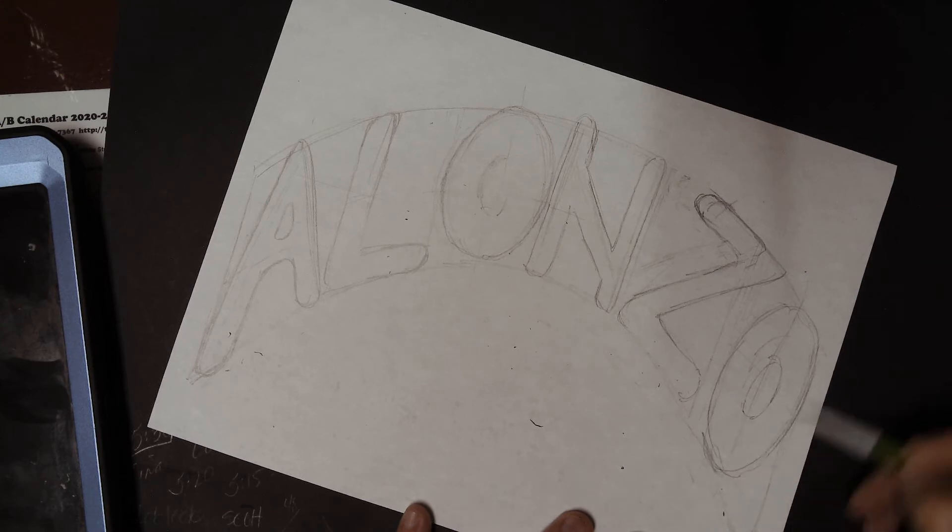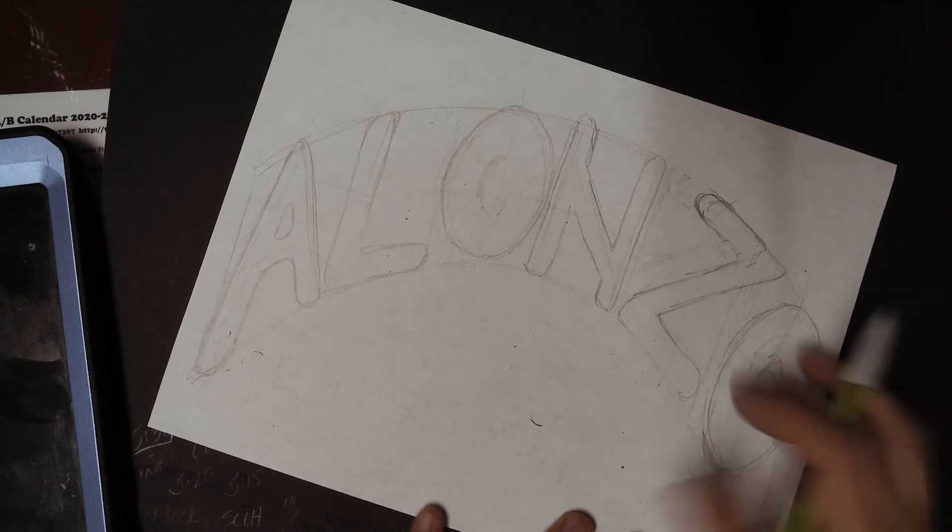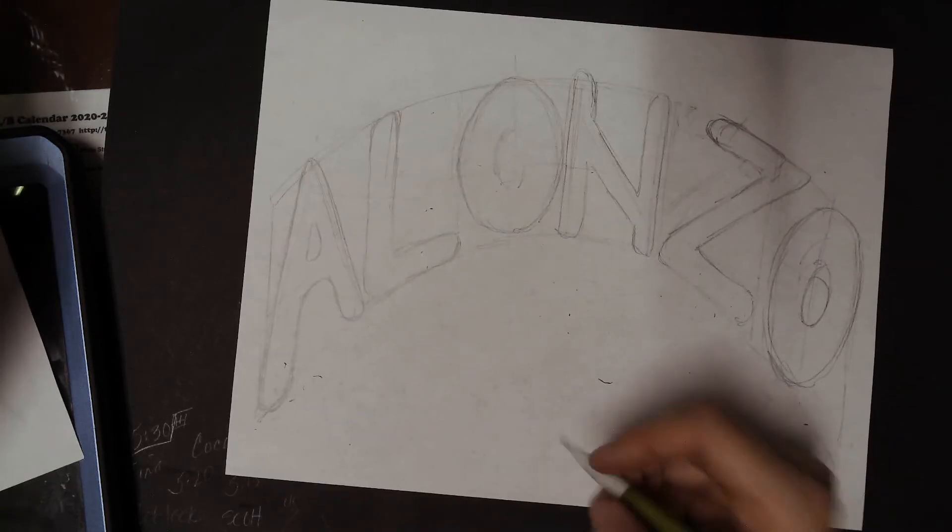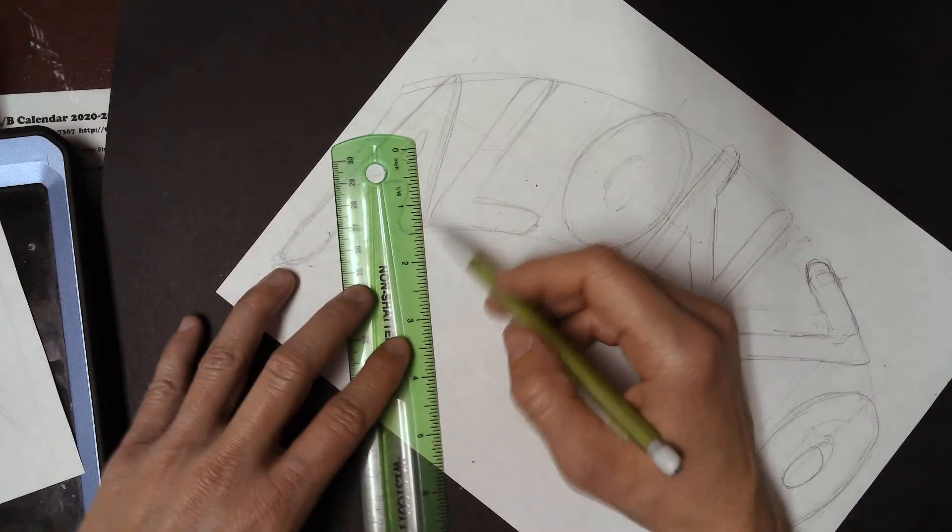And then we're going to have to do our three-dimensional part, which is the part what people find to be a little bit challenging. So, I'm going to put the vanishing point nice and low so that we have a lot of opportunity to make some long three-dimensional sides.